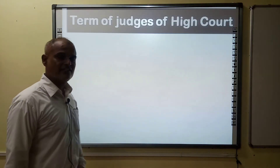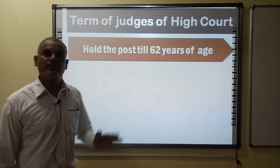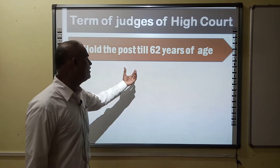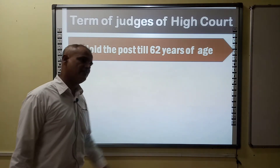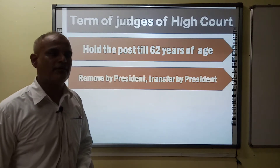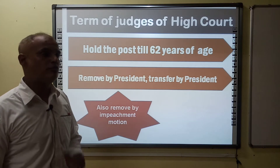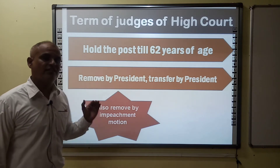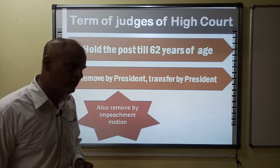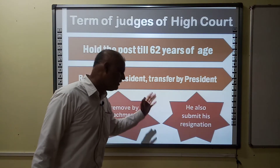In terms of the tenure of High Court judges, a judge holds the post until the age of 62 years. Judges can be removed by the President and transferred by the President. The judges of the High Court can also be removed through an impeachment motion, which must be passed by a two-thirds majority of both Houses of Parliament. Judges of the High Court may also submit their resignation.